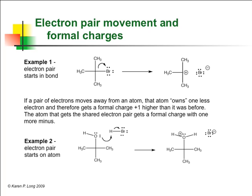It therefore gets a formal charge plus one higher than it was before. The atom that gets the shared electron pair gets a formal charge with one more minus because it essentially owns one more electron.